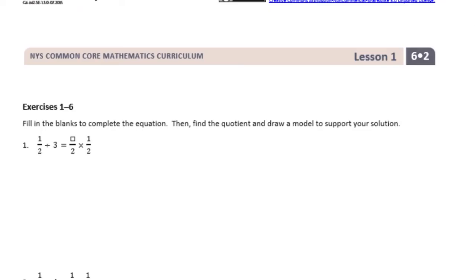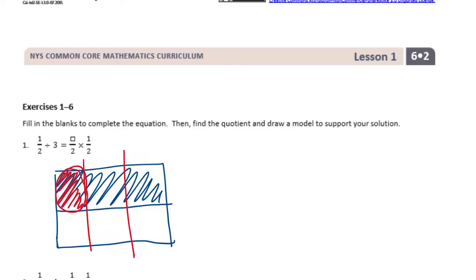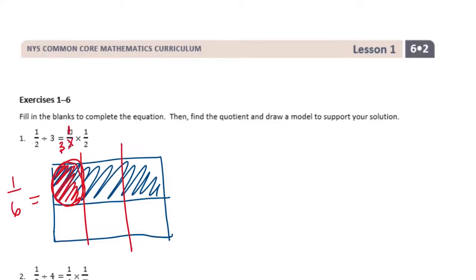For example, if we have 1/2 divided by 3, we can draw a picture first. We have 1/2 and we split it into 3 parts. This one part is equal to 1/6. The equation up top should be 1/3 — I think it's printed wrong — so it would be 1/3 times 1/2 equals 1/6. Just pretend the number says 3 instead of 2.